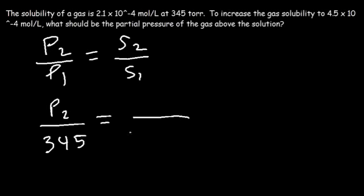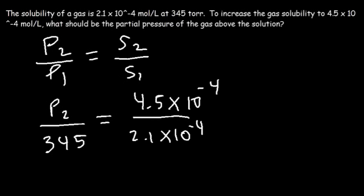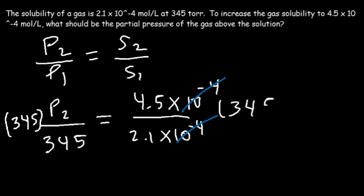S1, we said it's 2.1 × 10^-4. And S2 is the other solubility, 4.5 × 10^-4. So we can cancel these two numbers. And let's multiply both sides by 345. If we do that, these will cancel.